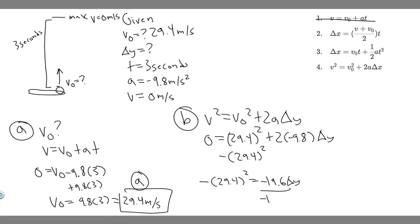And then if you just plug this in your calculator, so 29.4 squared, minus that, and then divide by minus 19.6, when you do this you're going to get 44.1. So delta Y equals 44.1 meters.